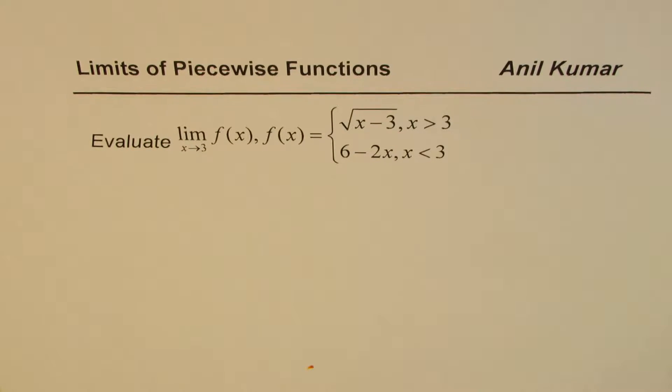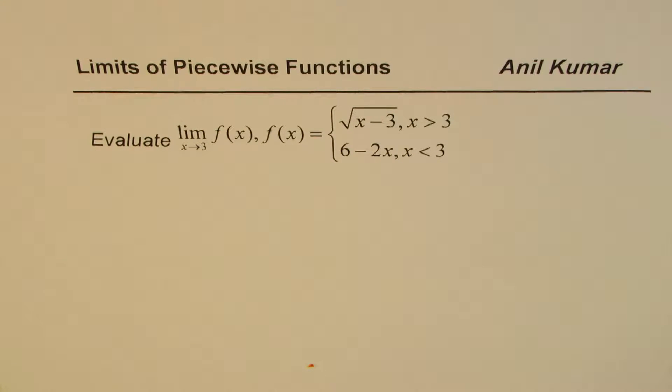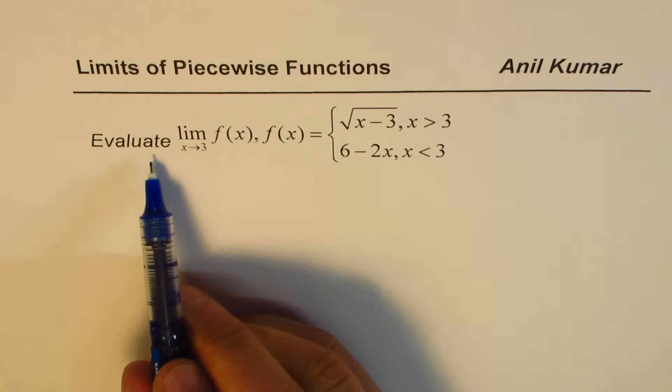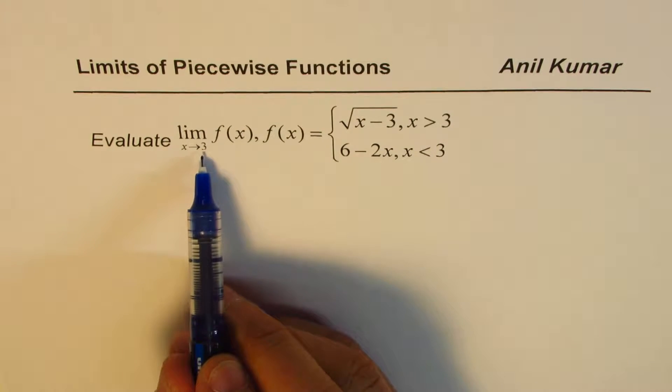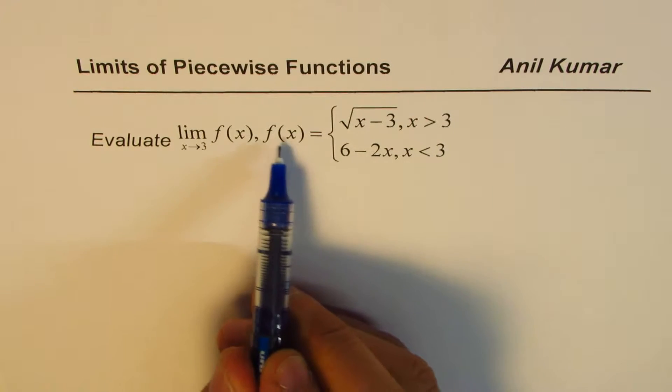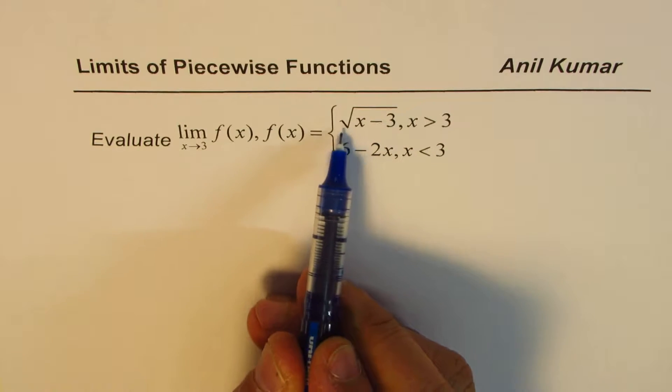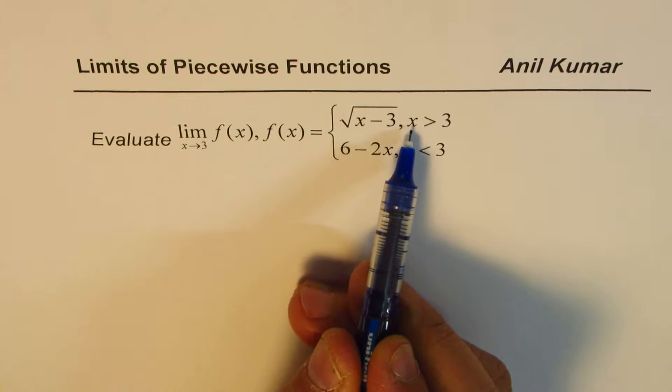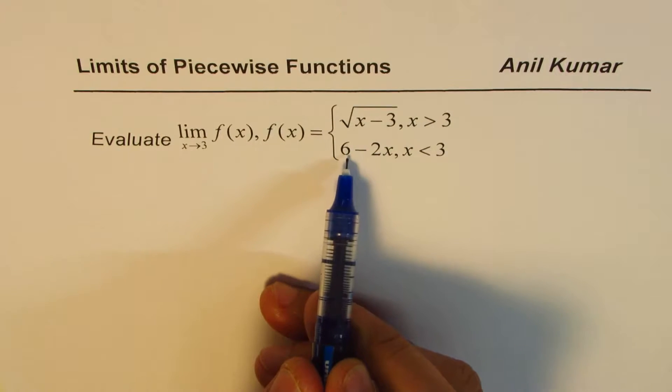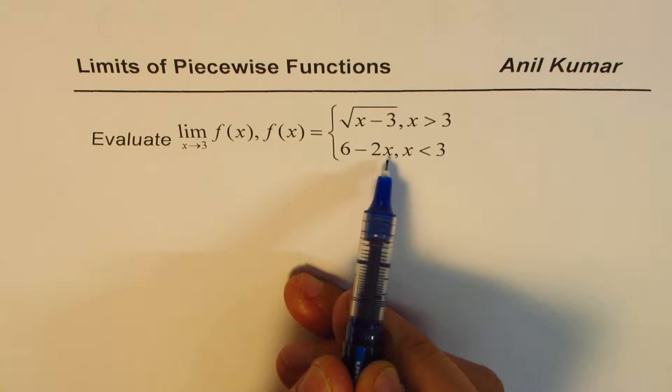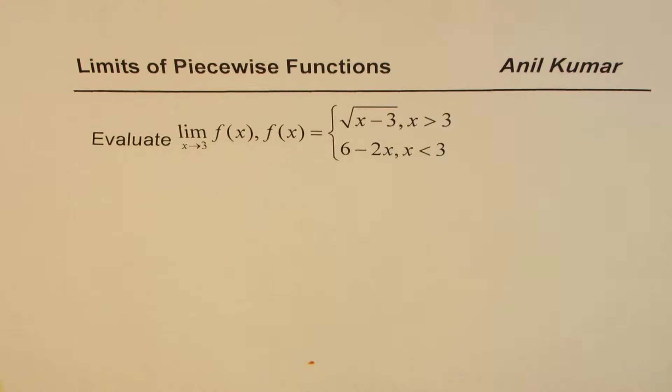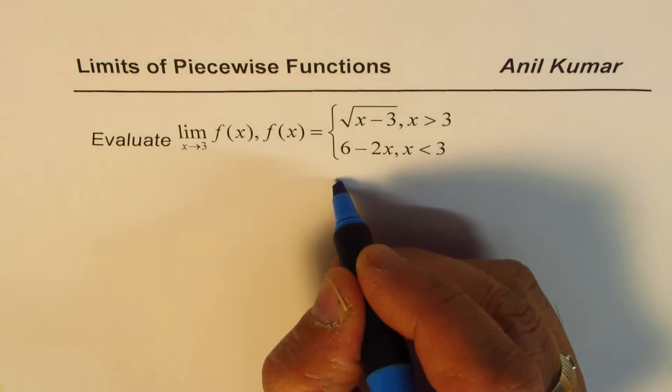I'm Anil Kumar and in this video we will learn how to find limits of functions when we are given piecewise functions. The question here is: evaluate limit when x approaches 3 of f of x, and f of x is defined as a piecewise function. It is equal to square root of x minus 3 when x is greater than 3, and is equal to 6 minus 2x when x is less than 3.